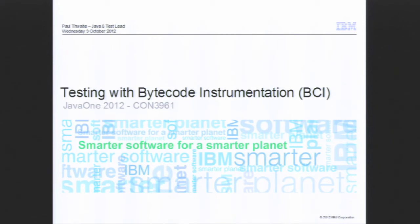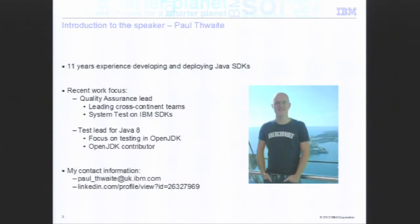A little bit about me first — a disclaimer. My name is Paul Thwaites, and I work at IBM Hursley in the United Kingdom. My primary role is the quality assurance test lead for Java 8, and I lead a team across various continents. I recently took on the role of OpenJDK contributor from a testing perspective. We have a problem with OpenJDK in terms of not having many tests, and we're trying to grow the pool of tests.